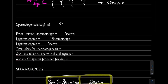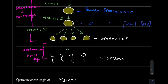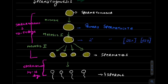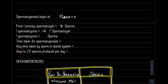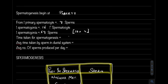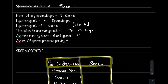Spermatogenesis begins at puberty. From one primary spermatocyte, four sperms are produced. One spermatogonium forms 16 primary spermatocytes. Therefore, one spermatogonium forms 16 × 4 = 64 sperms. Time taken for spermatogenesis is 72 to 74 days. Average time taken by sperms in the ductal system (spermiogenesis) is 14 to 16 days. Average number of sperms produced per day is 100 million.